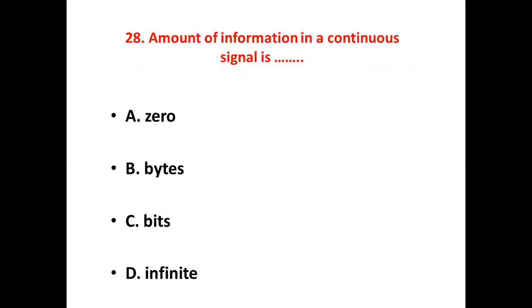Twenty-sixth bit: 1 bit equals to — Option A: 1 bit. Option B: 1.7 bits. Option C: 3.32 bits. Option D: 10 bits. Answer: Option C, 3.32 bits.